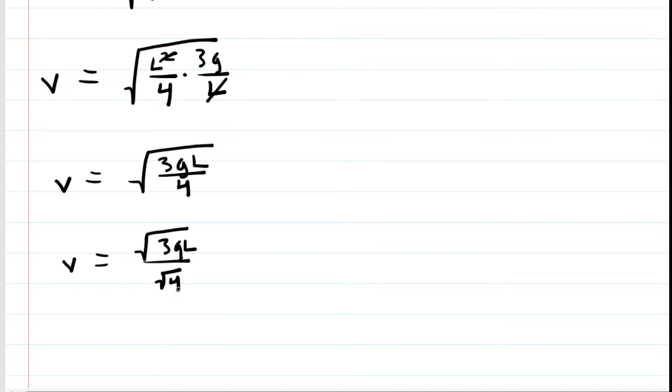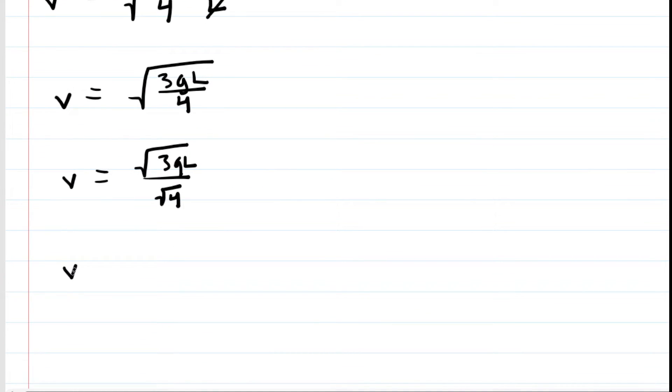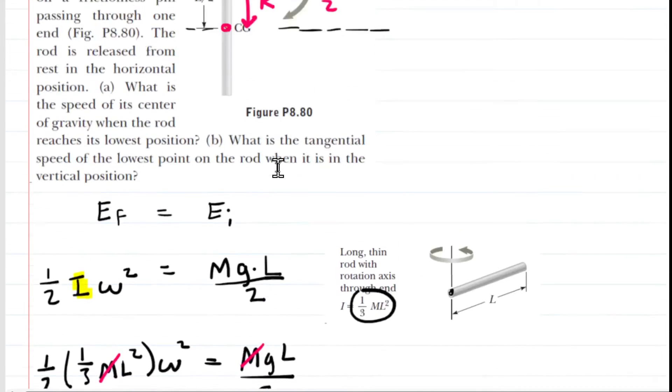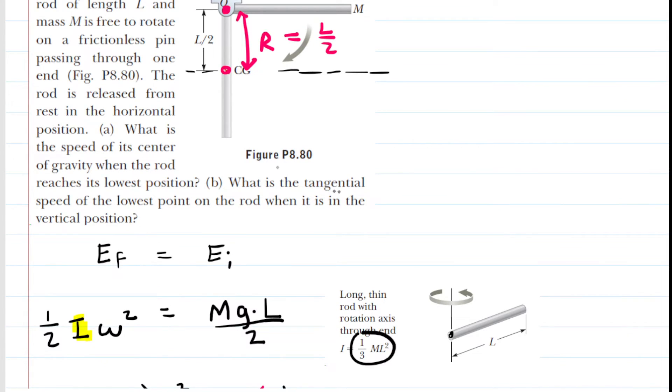And the only reason to do that is because the denominator has a perfect square in it. So when we take the square root of that denominator, we end up with a nice whole number of 2. So this would be the final answer to part A of the question. This is the speed of the center of gravity once the rod reaches that lower point. Now there is a part B to this question, and in part B,